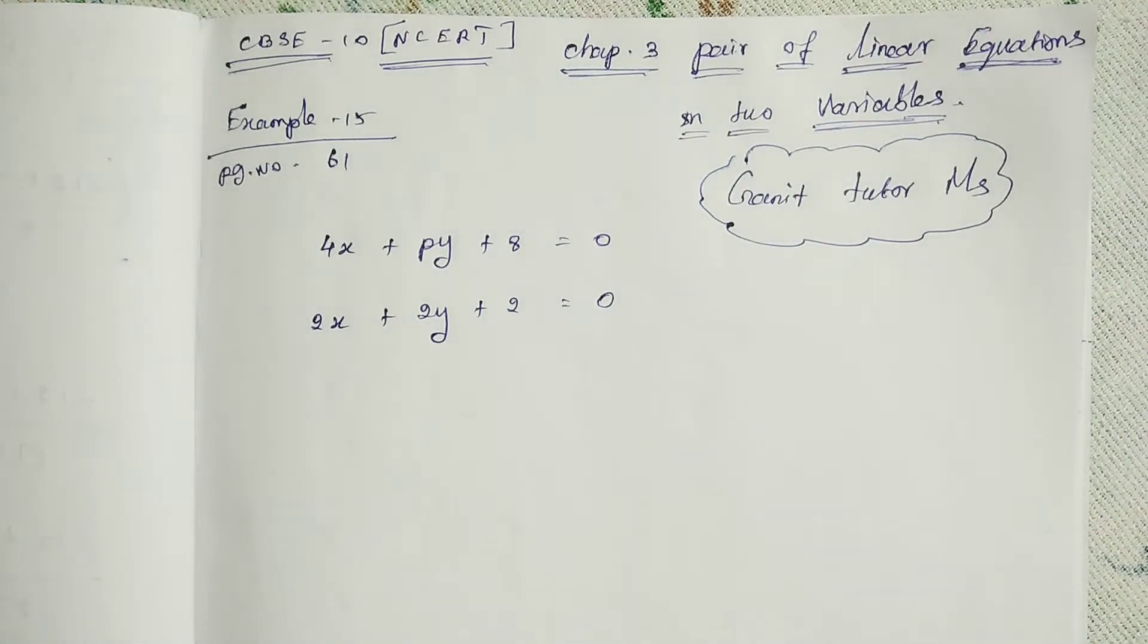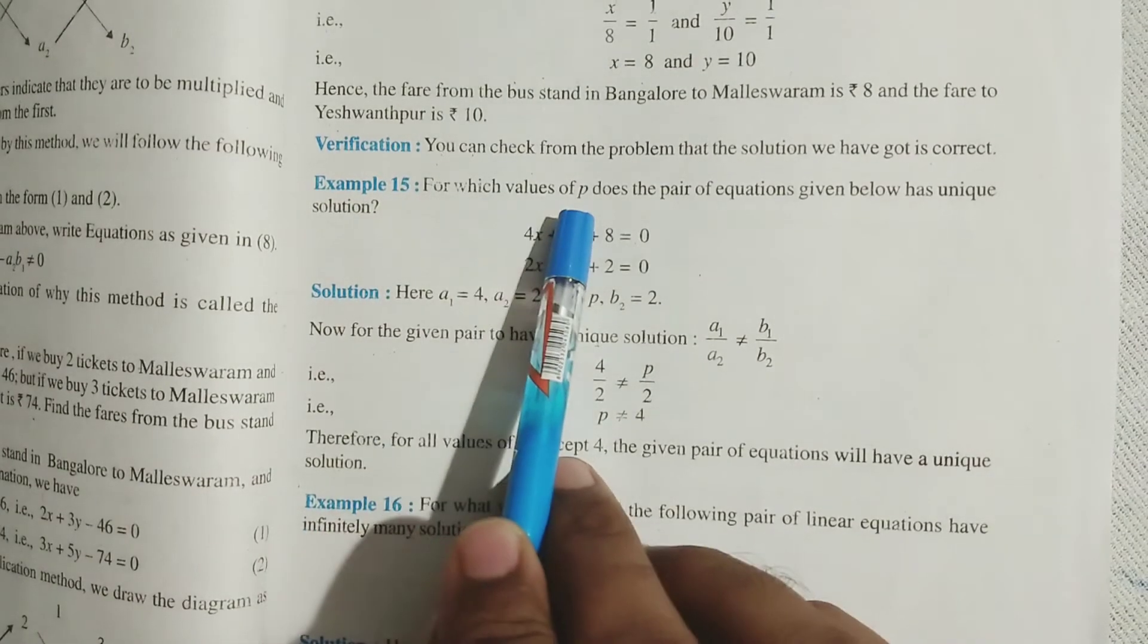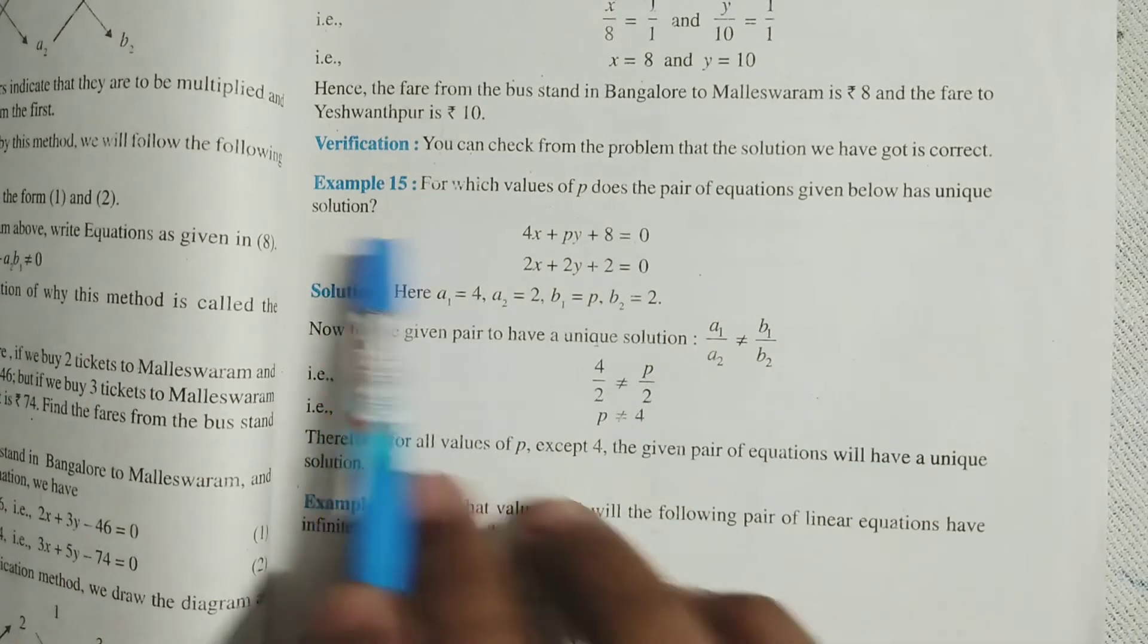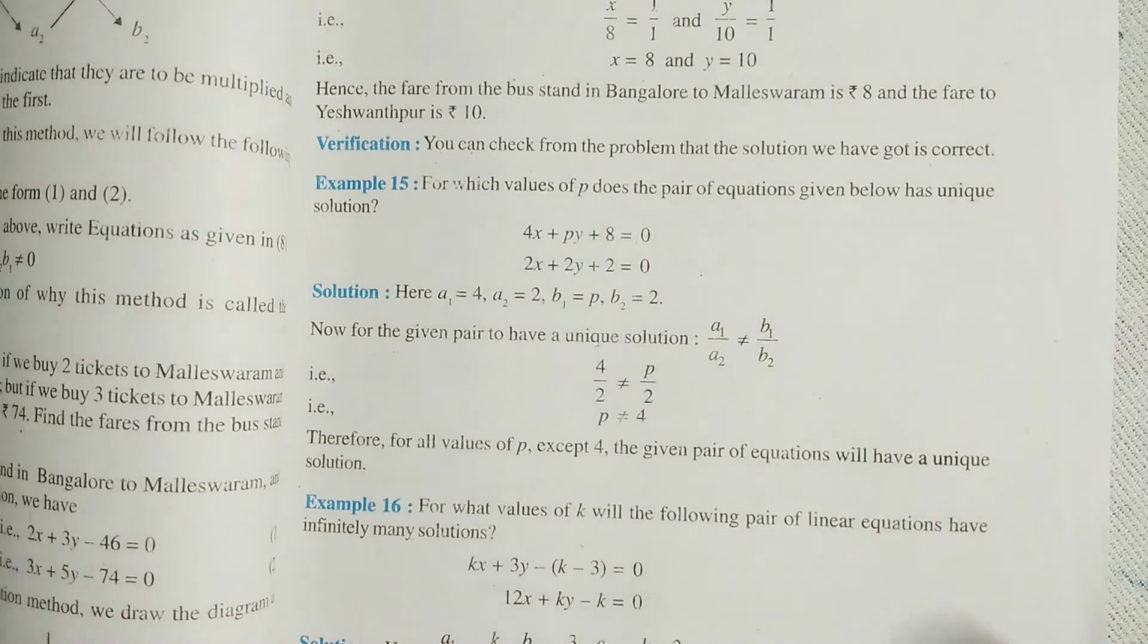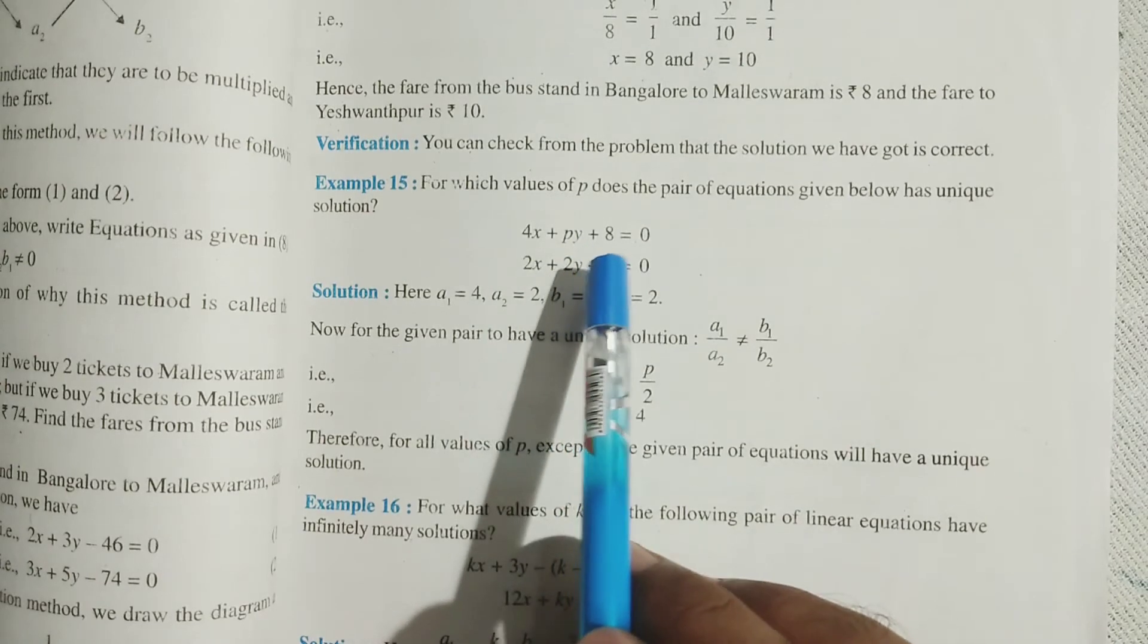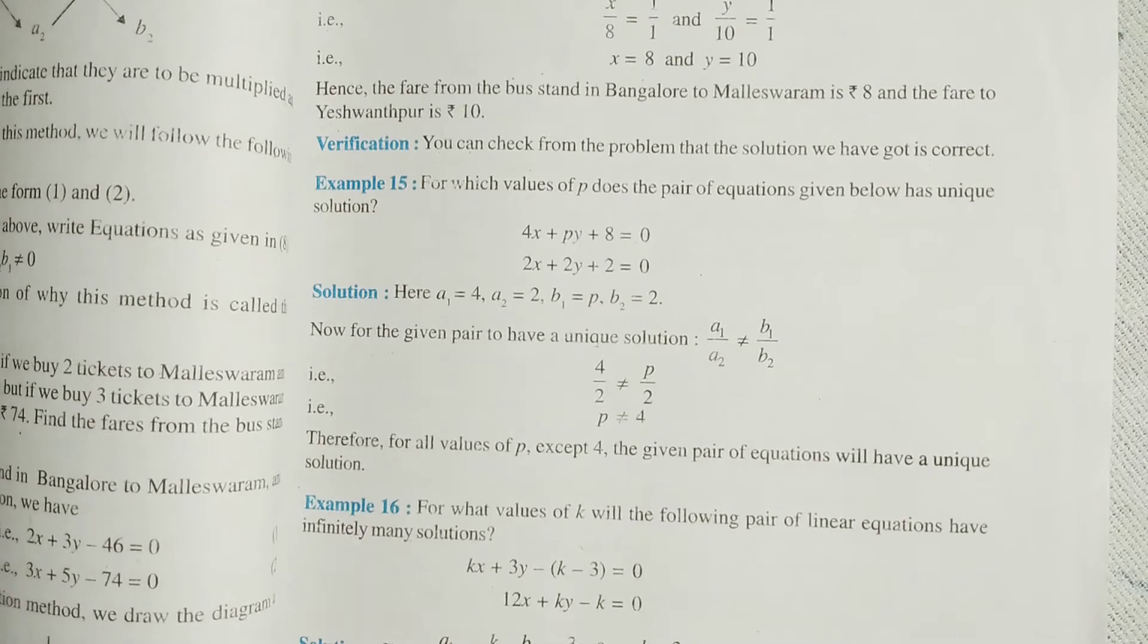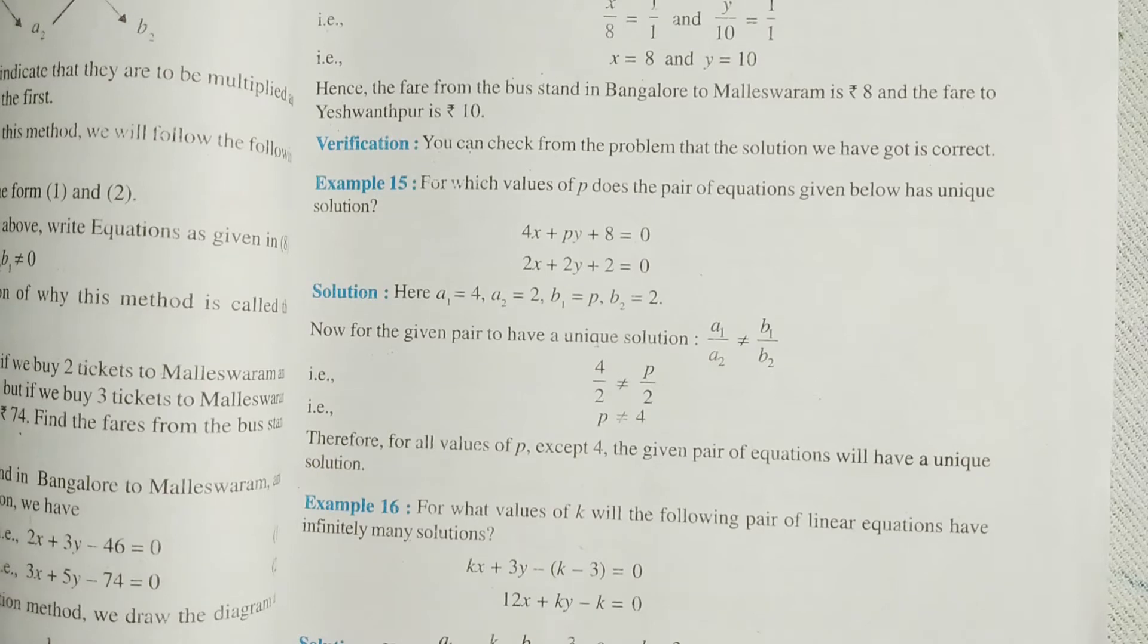Now, what are they given in this problem? Example 15: For which value of p does the pair of equations given below has unique solution? Here they are given a pair of linear equations in two variables. The coefficient A2 is p. They didn't give any number. The coefficient of y in the first equation is p. It is also variable. What are they asking? For what value of p the given pair of linear equations has a unique solution?